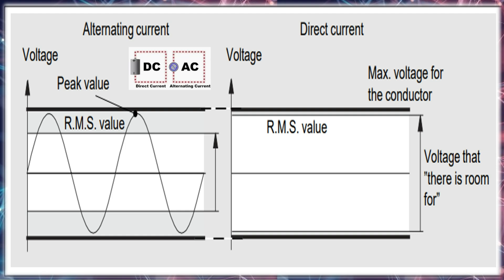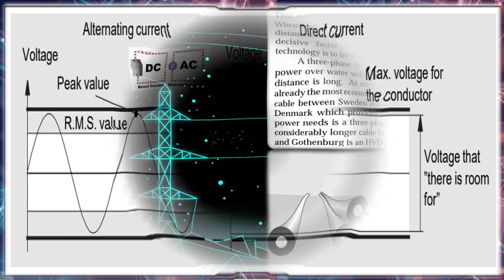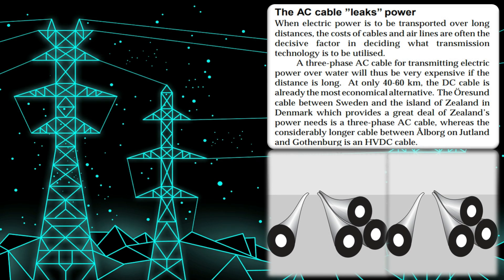As a result, the construction costs of HVDC lines are reduced. Regarding the ability to connect asynchronous AC systems, HVDC technology is asynchronous, making it completely different compared to HVAC grid integration.